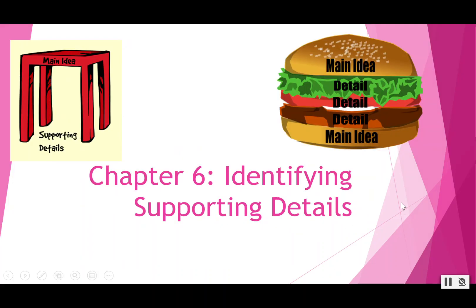Chapter 6 is about identifying the supporting details in paragraphs. I have a couple of pictures on the screen I like to use when teaching the difference between the main idea and supporting details. Think of it like a table or an umbrella. The table top is your main idea — that's where you set everything. But the main idea needs support, those are the table legs. The supporting details support your main idea and give evidence to prove that it's correct.